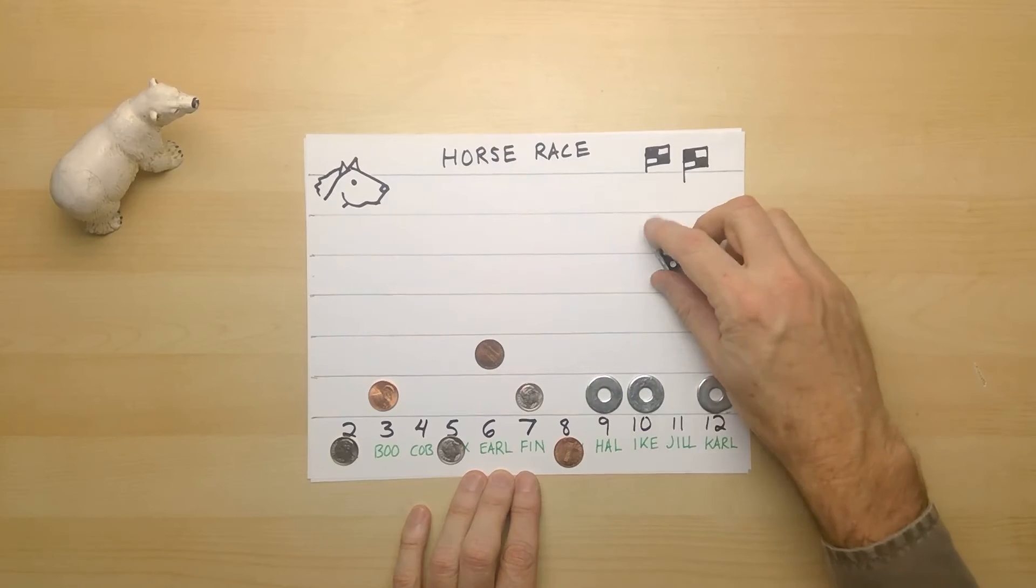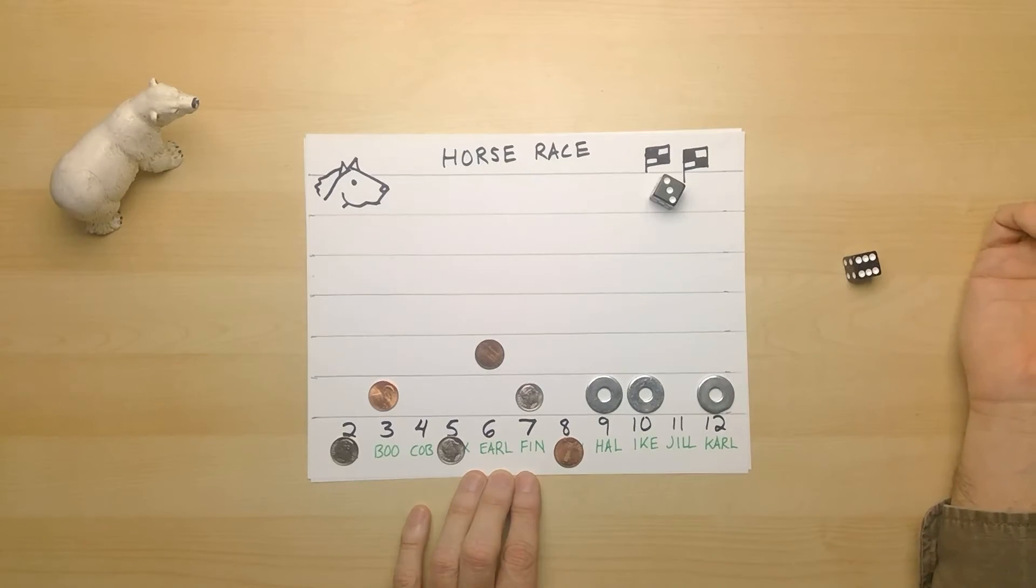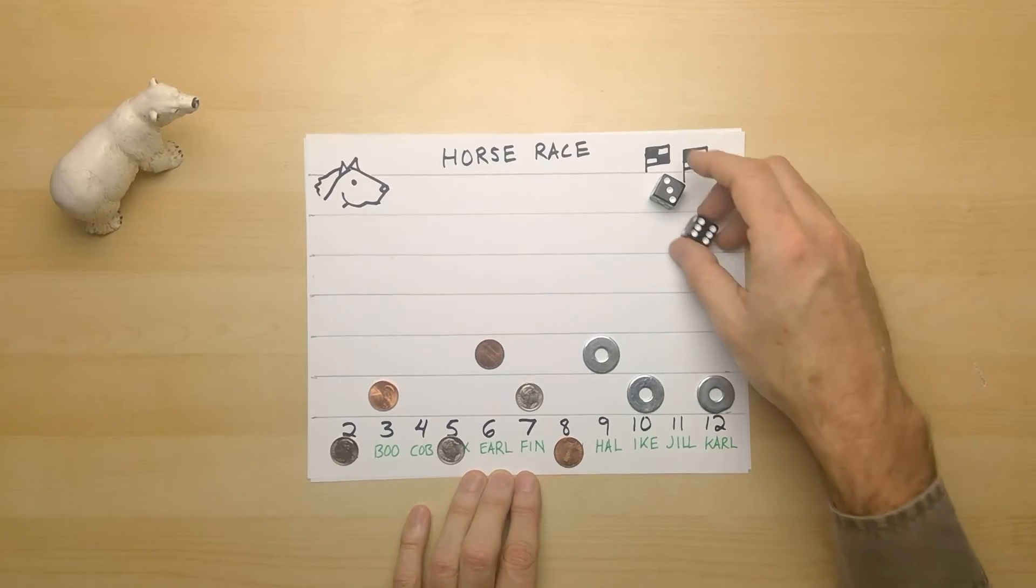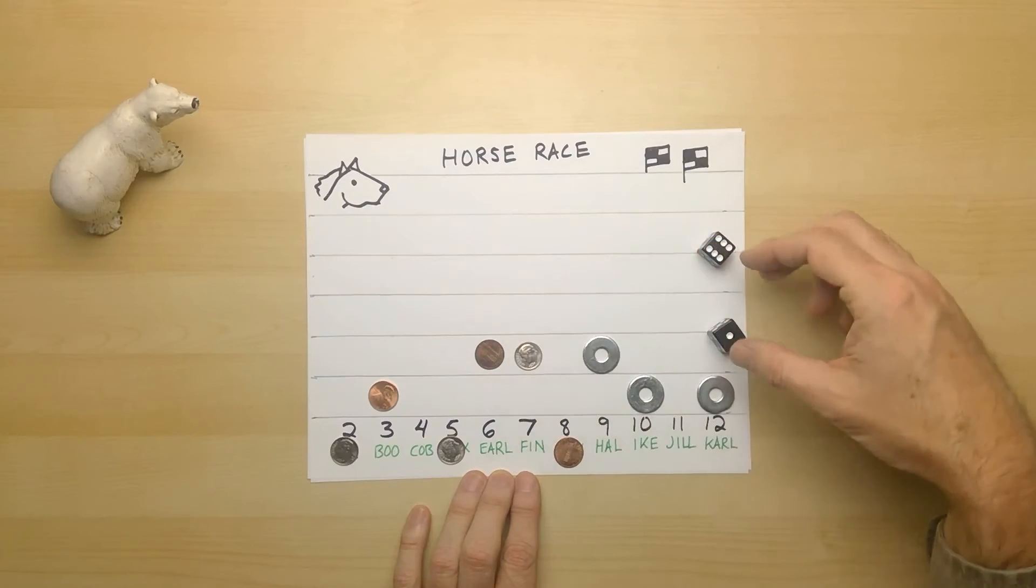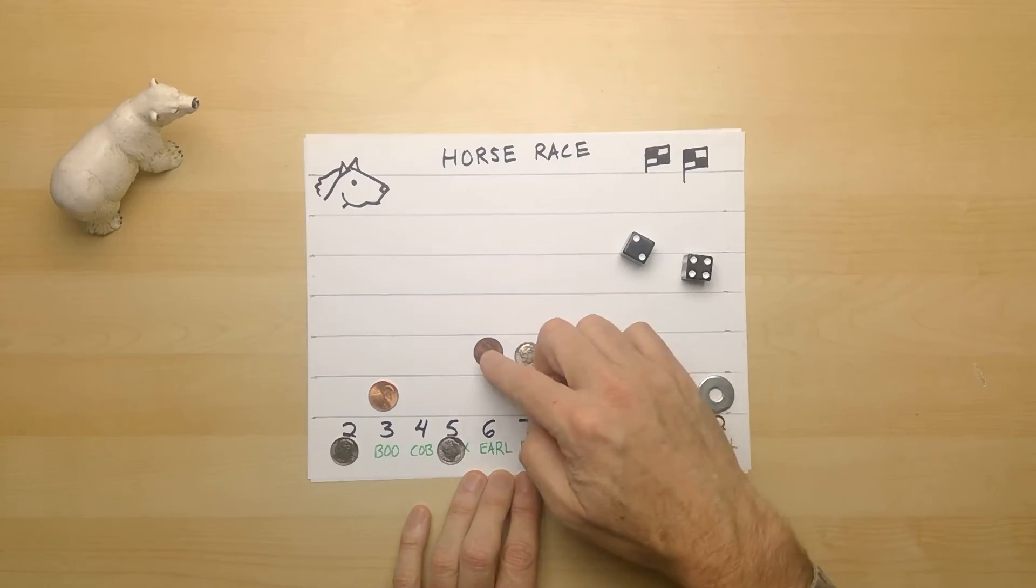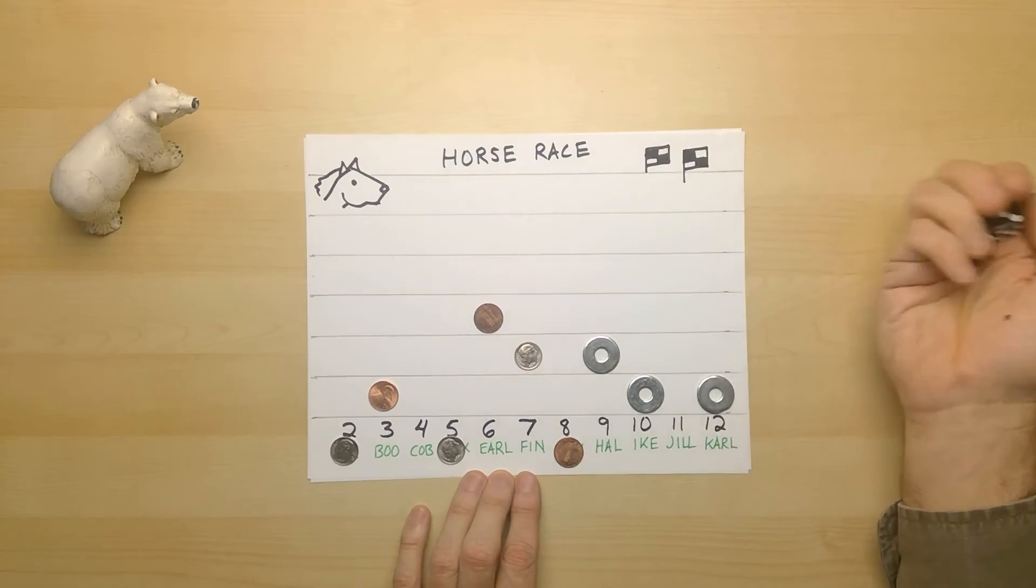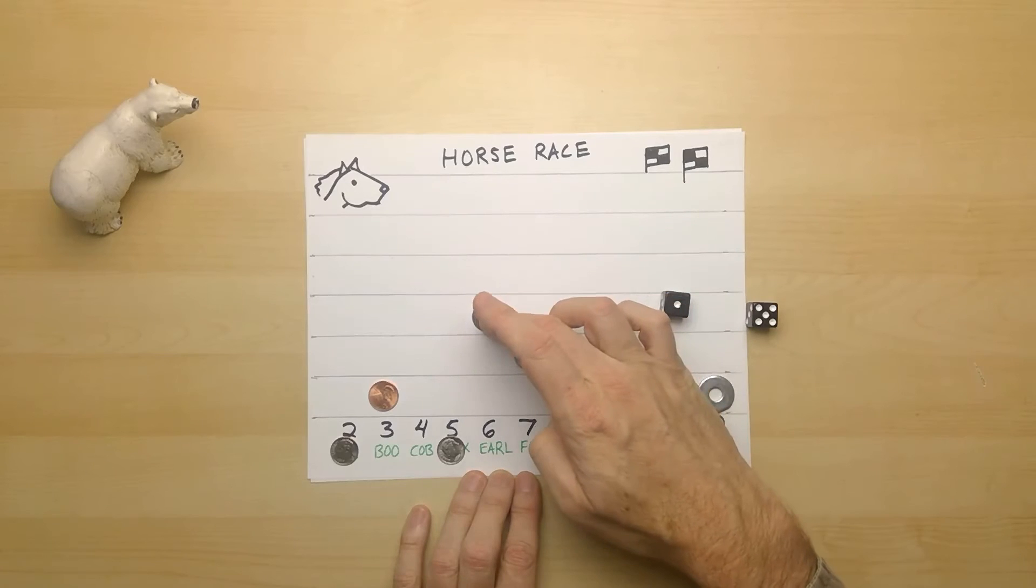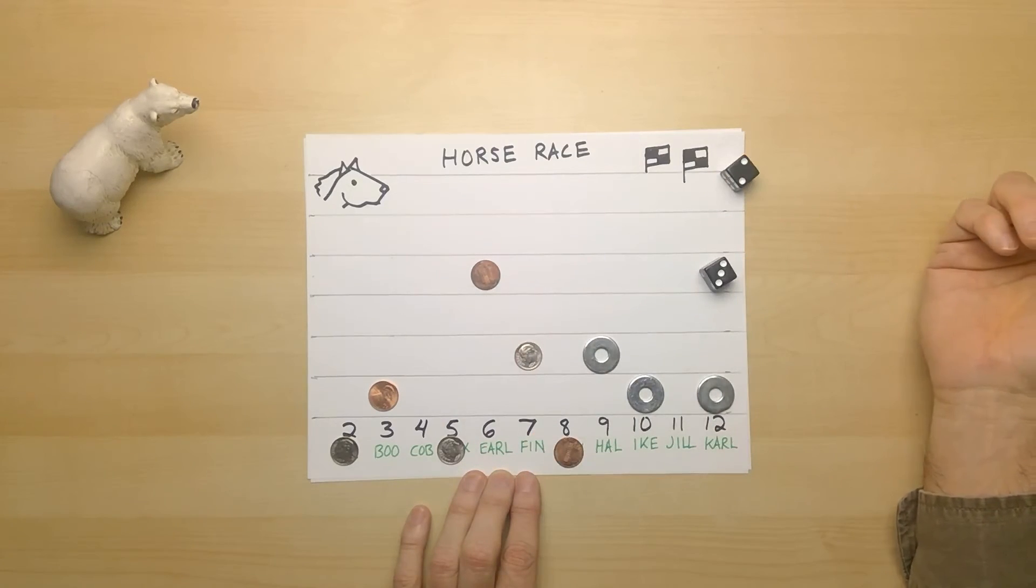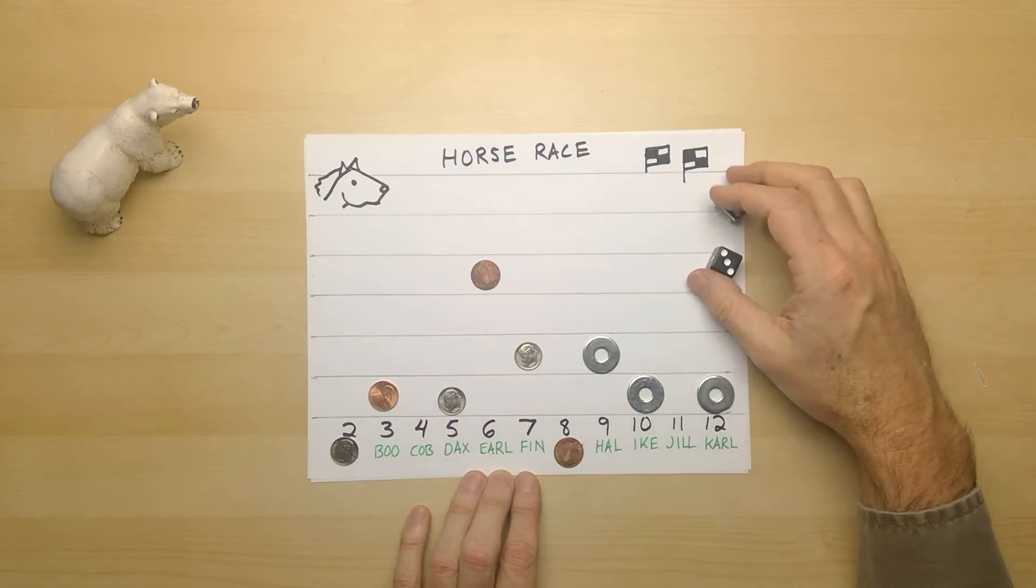Donut's doing pretty well. Nine again. Hal catches up with Earl. Seven. Finn creeps up there. Catches up with the leaders. Six. Earl takes another move forward. Six again. Earl's trying to win the race.